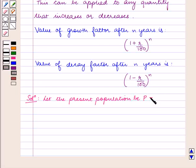It is given to us as 500,000. The decrease rate of population R is equal to 7% annually and the time n is equal to 2 years.